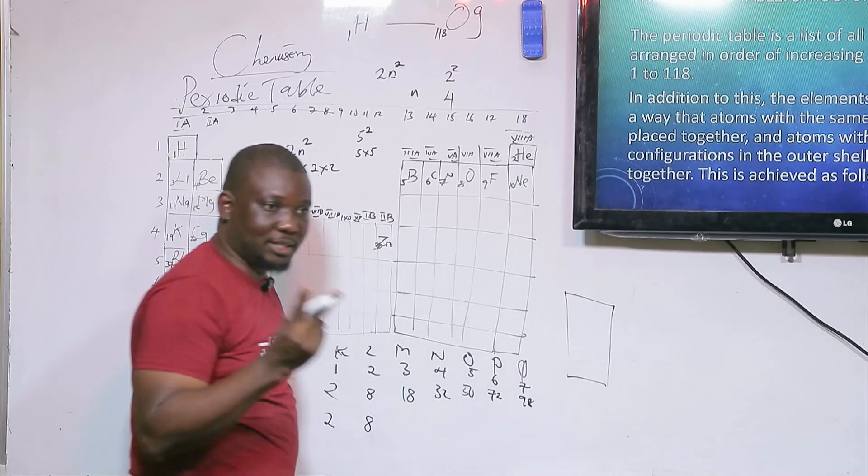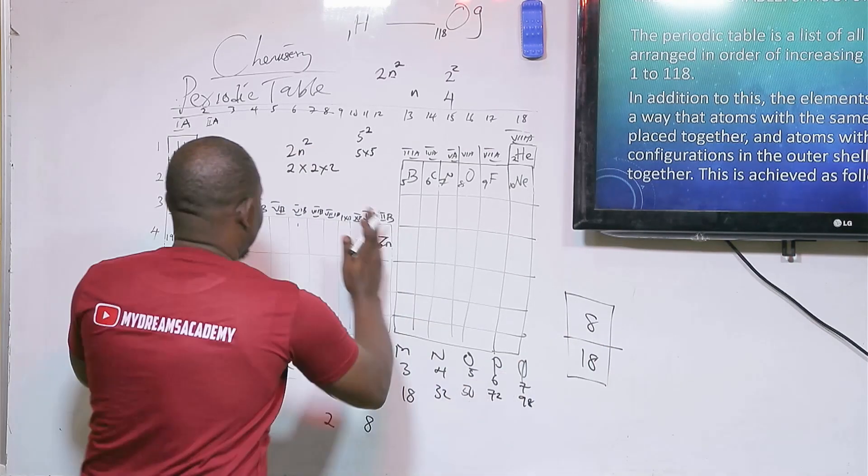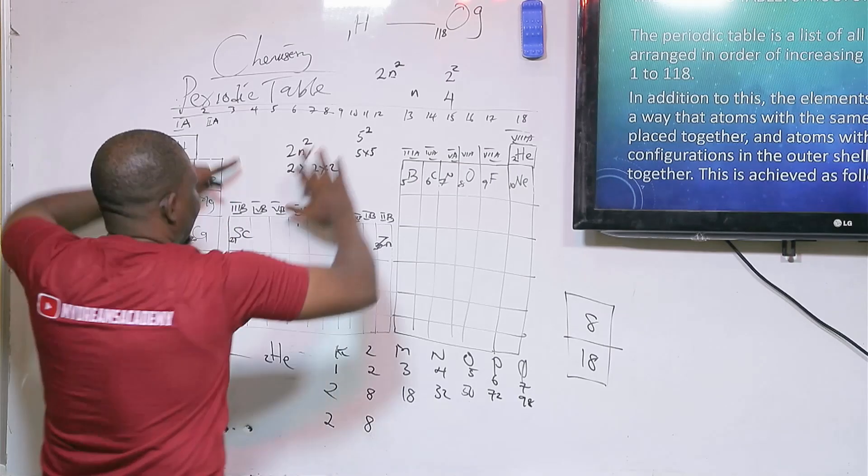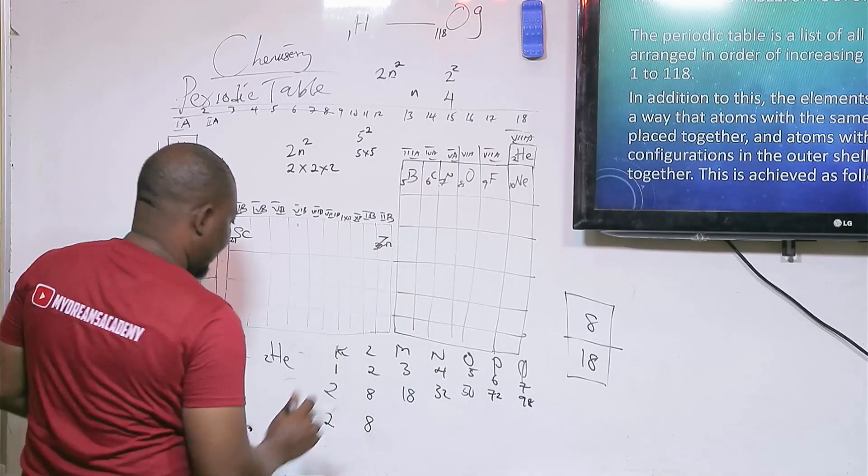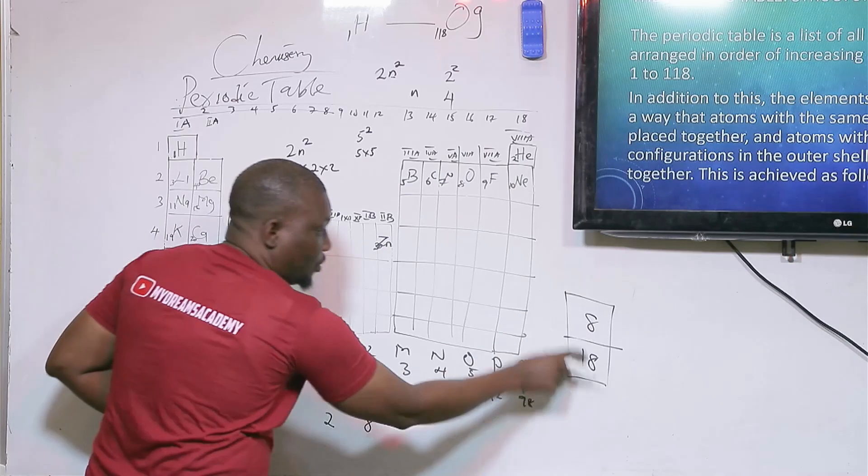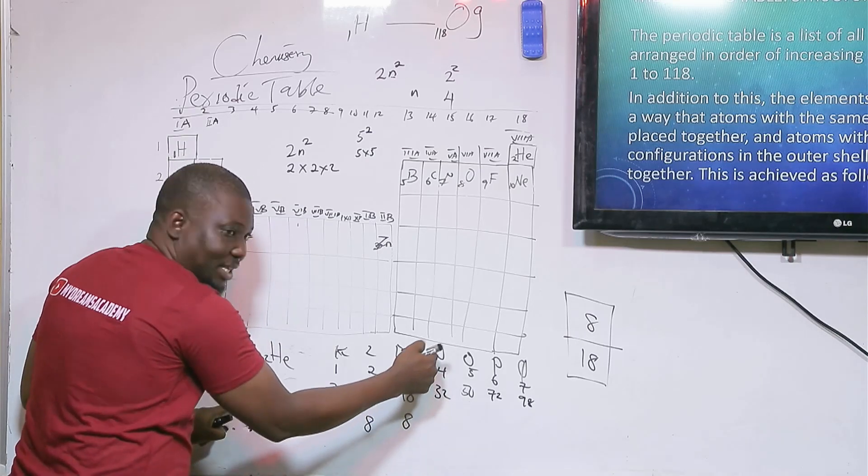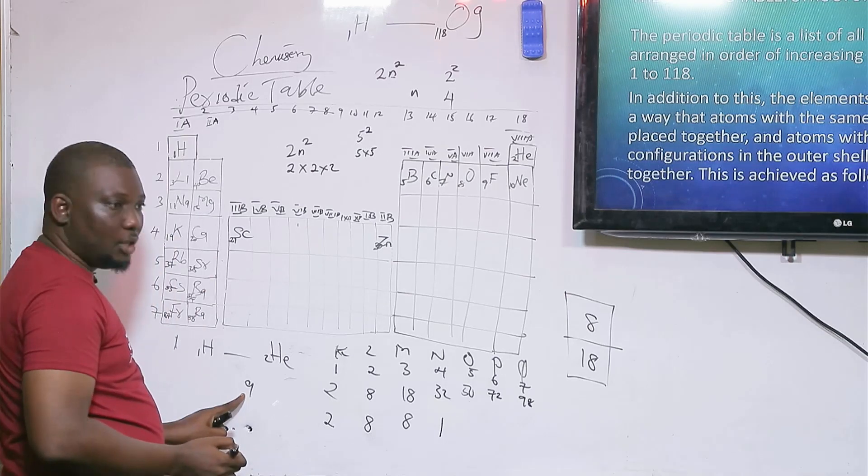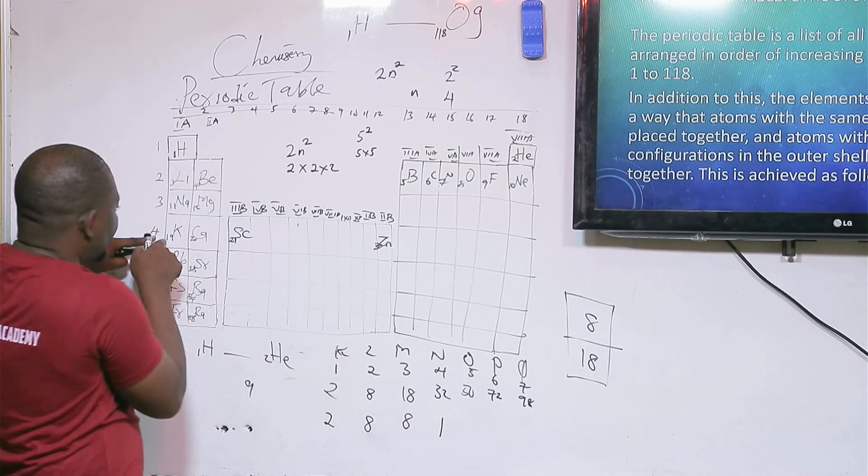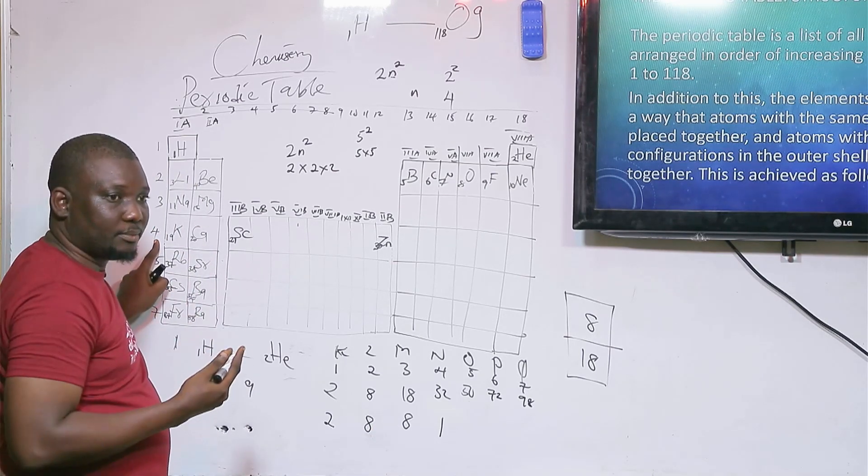Since 9 is remaining, which octet level is 9 closest to, 8 or 18? What enters is 8, remainder is 1. So the last shell is 1. If you count the number of shells here, you have 4 shells: 2, 8, 8, 1. Potassium belongs to period 4 because it has 4 atomic shells. That's why it's here.